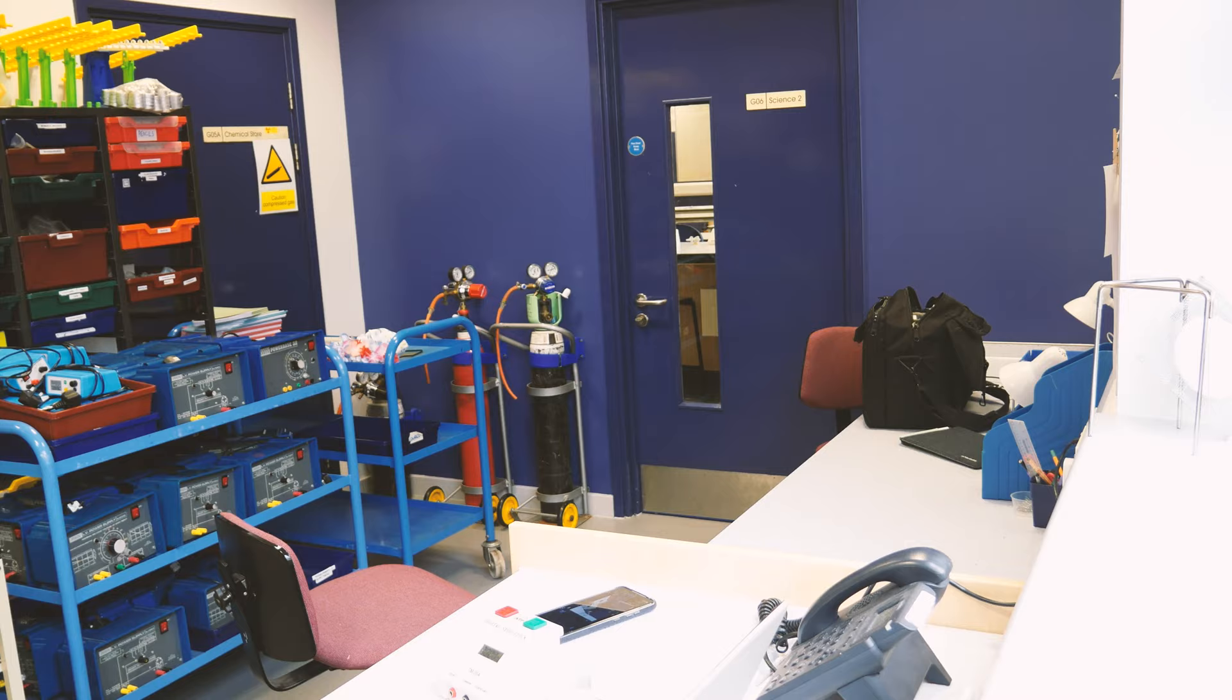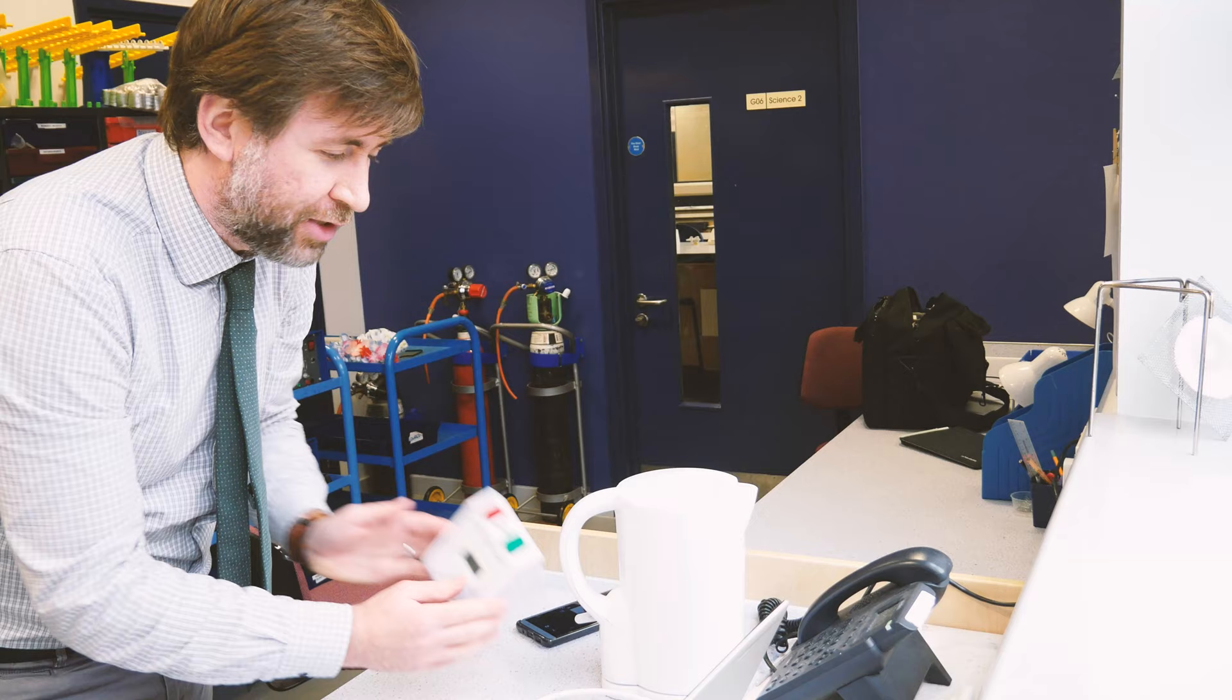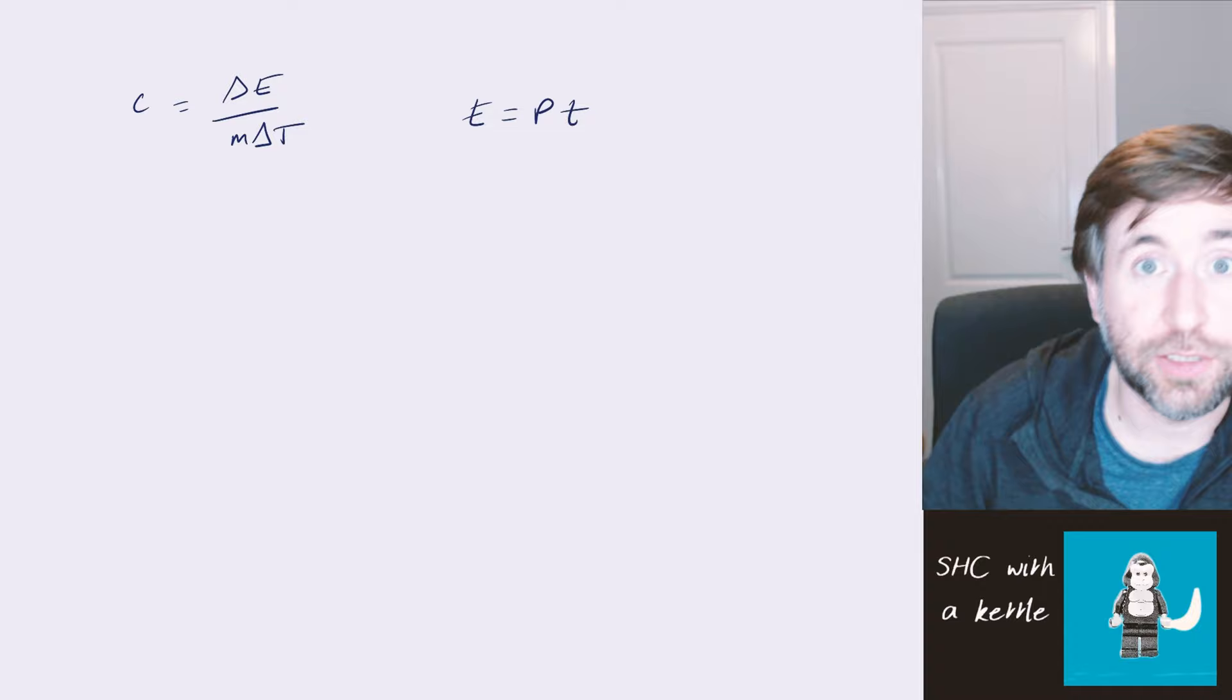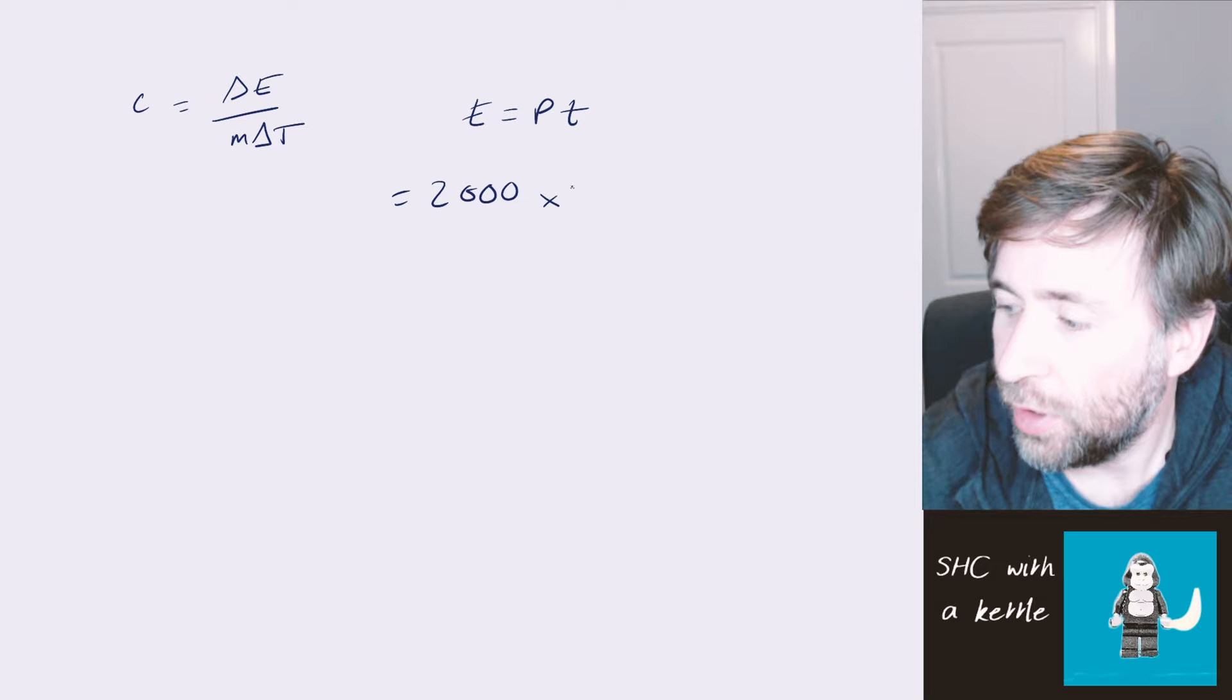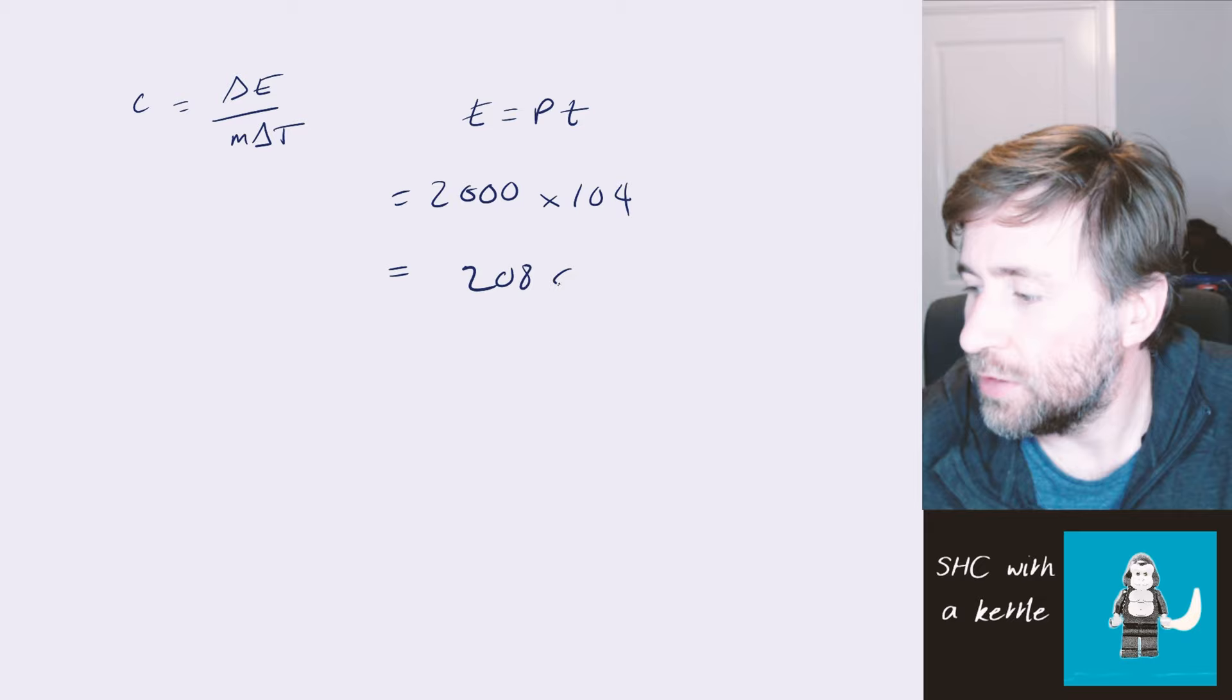And start again. And the way in which I'm going to calculate the energy supplied to the water is just by using the power of the kettle and multiply it by the time taken. The kettle is 2000 watts, and the time was 104 seconds. So the energy supply is the power multiplied by the time. So here we've got our two equations we're going to use. Our equation for specific heat capacity, c is delta E over m delta T, and our equation for energy, that's the energy supplied, which is power times time, Pt. The power of the kettle was 2000 watts, and for our first reading, we've got 104 seconds. So the total energy supplied to the water in those 104 seconds is going to be 208000 joules.